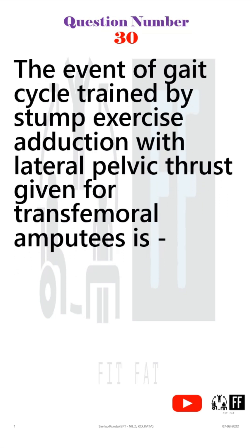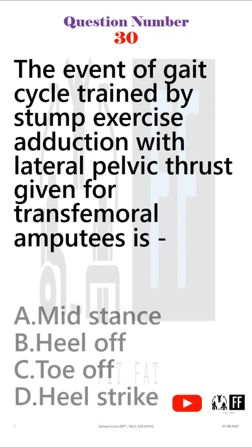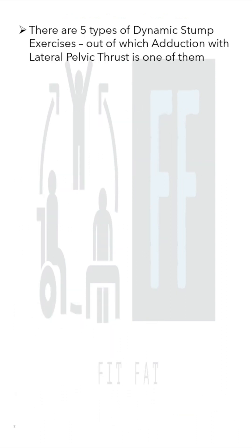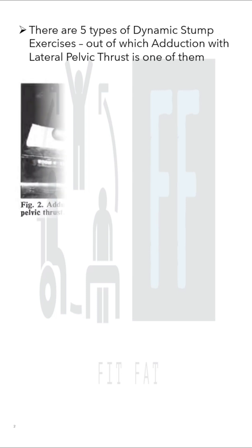Question number 30. The gait cycle trained by stump exercise — adduction with lateral pelvic thrust — given for transfemoral amputees. There are five types of dynamic stump exercises, of which adduction with lateral pelvic thrust is one of them.